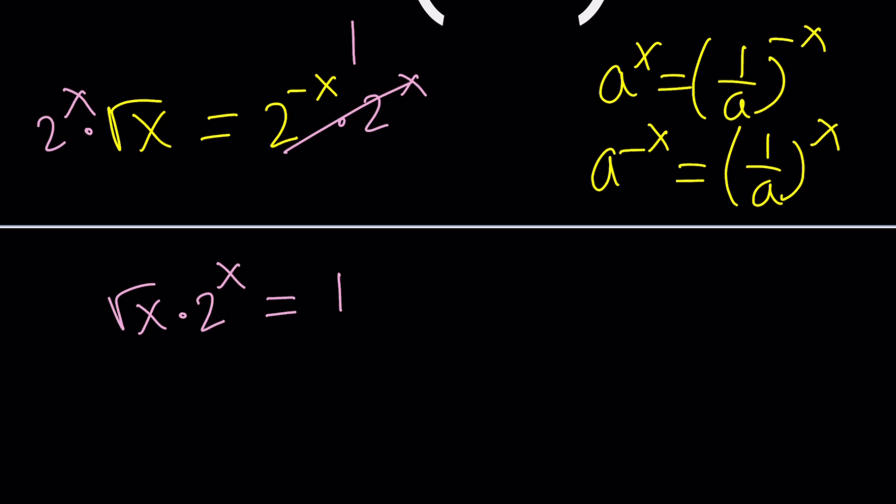Can x be zero? Well you probably know that two to the power zero is one but zero times one does not equal one. So unfortunately zero is not a solution. Can one be a solution? One times two to the power one equals two. Then it's not a solution either because we get two. We need one.